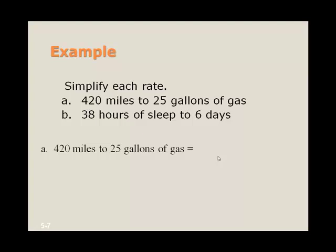So the 420 miles goes in the numerator, 25 gallons in the denominator. And again, we want to simplify 420 divided by 25, and that becomes 84 over 5. And we would write miles per gallon, or 84 miles to 5 gallons.